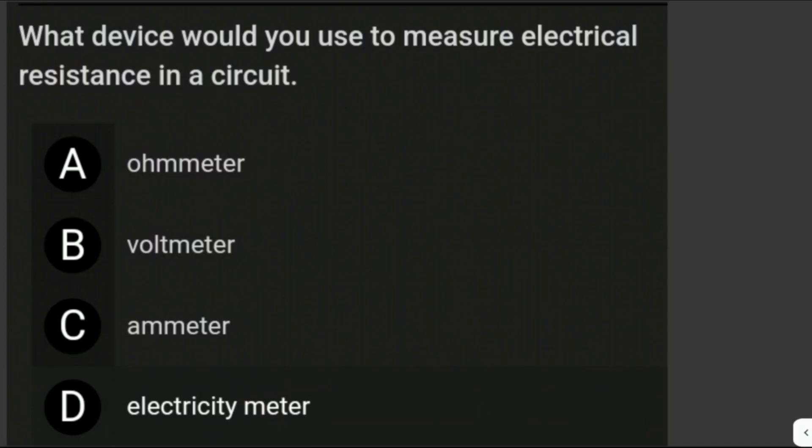What device would you use to measure electrical resistance in a circuit? Electrical resistance is measured in ohms. Therefore, it can be measured with an ohmmeter. The answer is letter A.